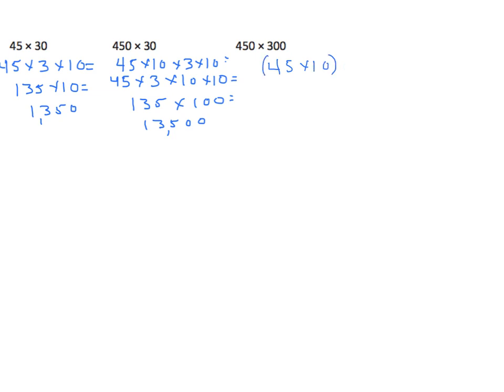So I have the first factor is equal to 45 times 10. And I could do that times 3 times 100. And I can use my commutative property to rearrange these and my associative. So I have 45 times 3 times 10 times 100. Totally acceptable.